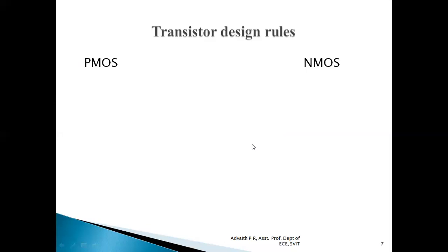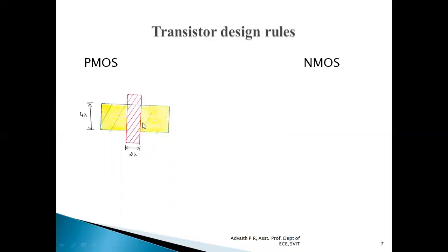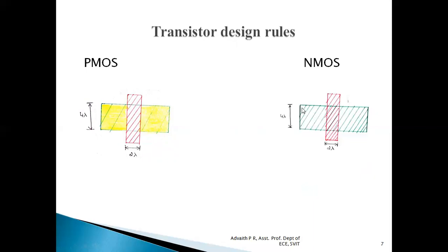Now let us see how transistors are formed and how transistor design rules must be observed. We have two kinds of MOSFETs: P-channel and N-channel. A PMOS transistor is formed when P-type diffusion is crossed by polysilicon — the minimum width of the P-type diffusion should be 4 lambda and the minimum width of polysilicon should be 2 lambda. Similarly, an NMOS transistor is formed when N-type diffusion is crossed by polysilicon, with the N-diffusion width at 4 lambda and polysilicon width at 2 lambda.